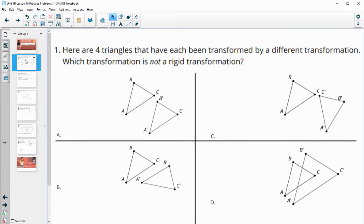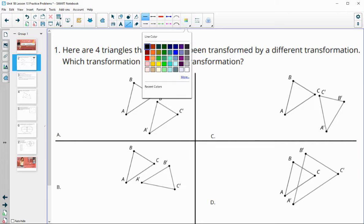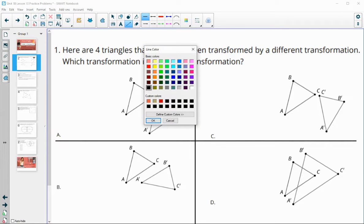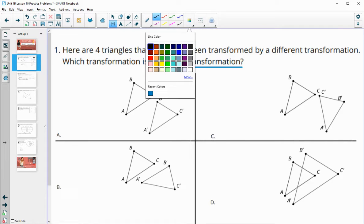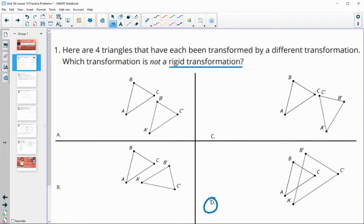Number one says that there are four sets of triangles that have been transformed by a different transformation. Which one is not a rigid transformation? Remember that a rigid transformation means they stay the same size. So we're looking for ones that change sizes, and in this case, that is D.